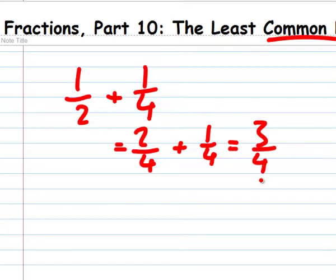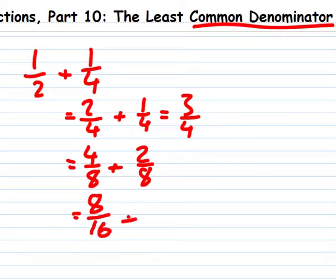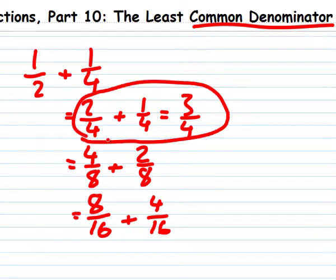Now, you could write one-half plus one-fourth equals four-eighths plus two-eighths, or eight-sixteenths plus four-sixteenths. But there's no need to do that. It's just simpler to use the smallest denominator you can that'll work for both fractions.